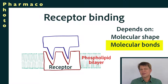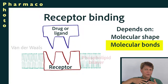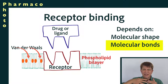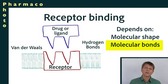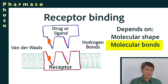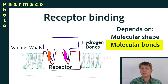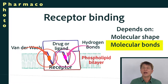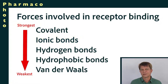Recall how the phospholipid bilayer is held together by van der Waals forces — the tails are held together by van der Waals forces, the heads are held together by hydrogen bonds. Well, the binding of the ligand to the receptor uses those forces as well, and also other things like ionic bonding. Ionic bonding is a fairly strong force, a lot stronger than those other two.